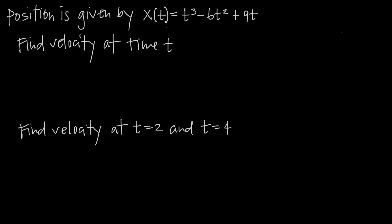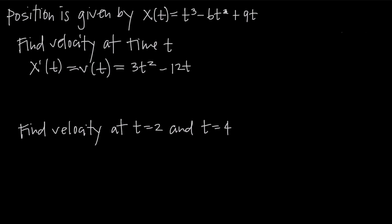We're going to be walking through a lot of questions about the position function. The first one is to find velocity at time t. We need to take the derivative of position in order to get velocity. So x prime of t, the derivative of the position function, is going to be equal to the velocity function v of t. Using the power rule, we bring the 3 down and subtract 1 from the exponent to get 3t squared, then negative 12t, and the derivative of 9t is just 9. So the velocity function is v of t equals 3t squared minus 12t plus 9.